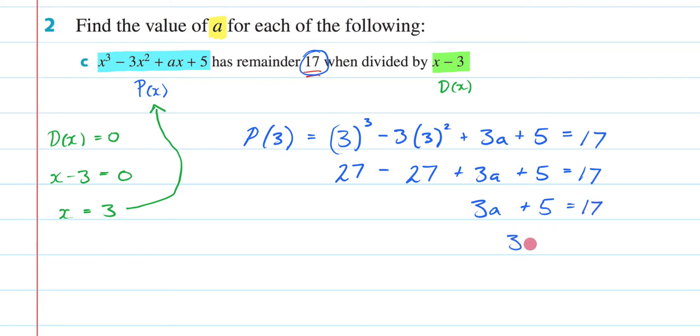I then am going to minus 5 from both sides, so that means I'm going to end up with 12 over here. Then I'm going to divide both sides by 3, so I'm going to get a is equal to 4.